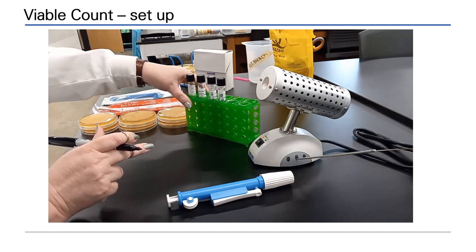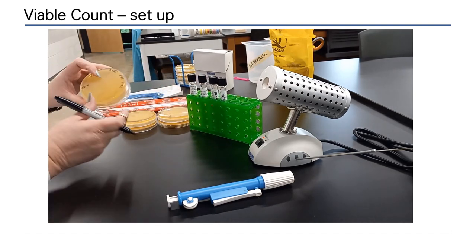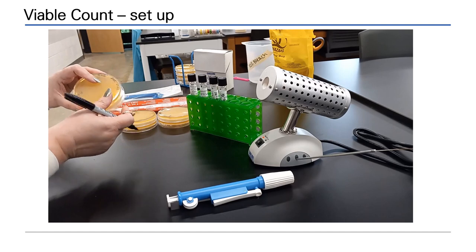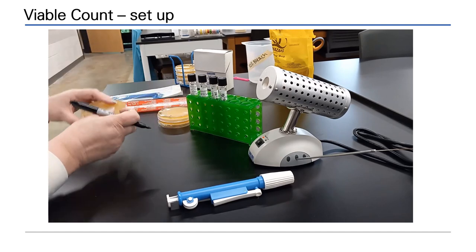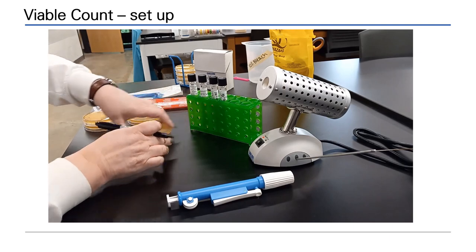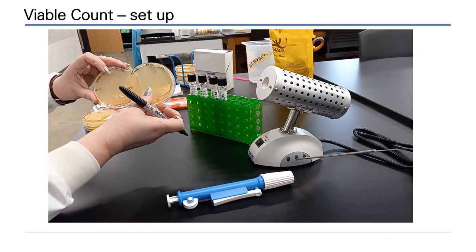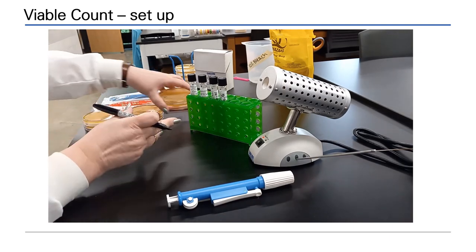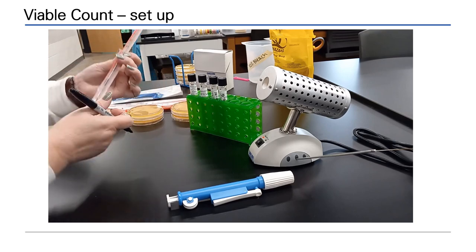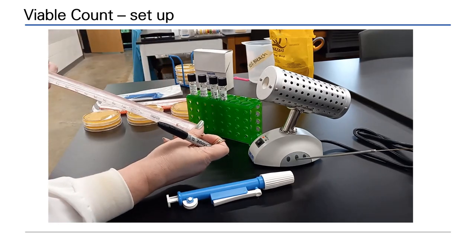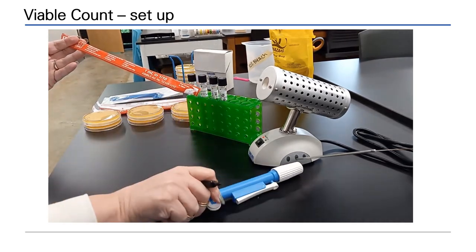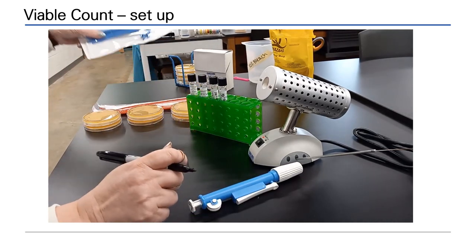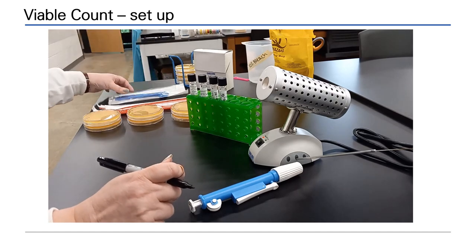Non-selective agar plates will be required at the end of the technique to plate the dilutions. Notice that each dilution has two plates. This will allow for accuracy in the determination of the viable count. You will also need serological pipettes and a pipette aid for the dilution. For the plating, we will need sterile spreaders.